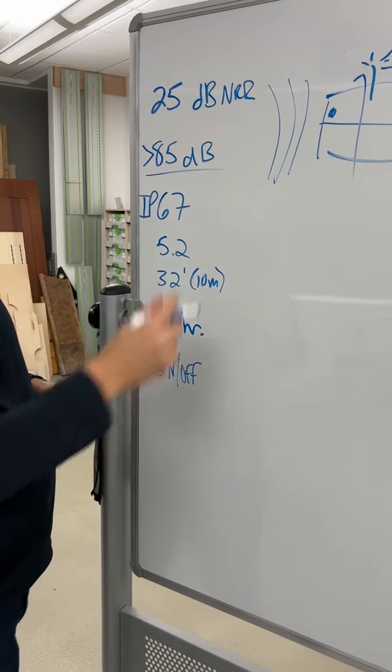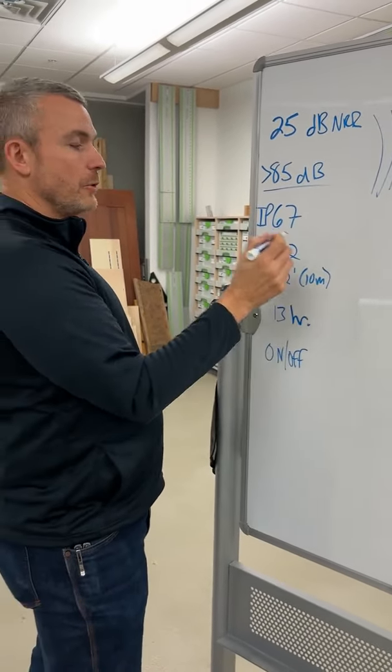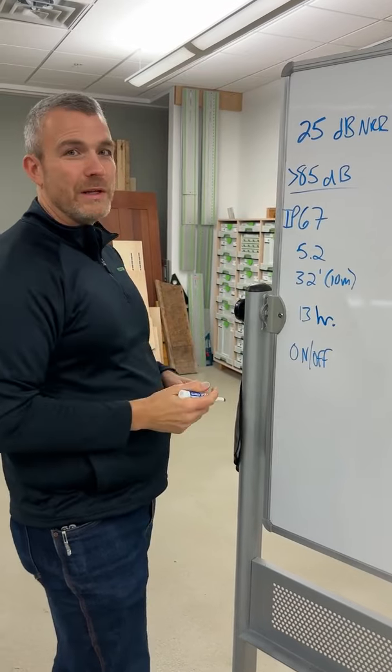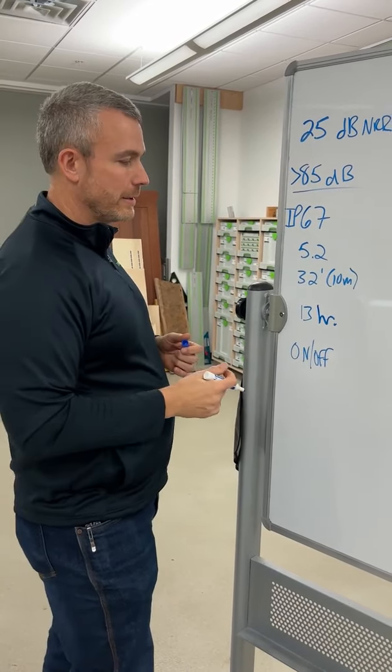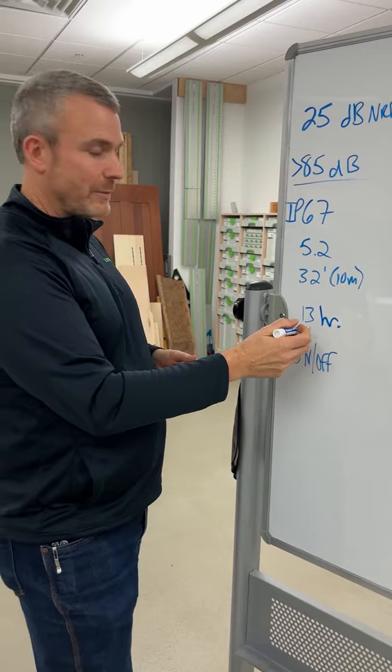You have an IP67 rating for dust and water intrusion. Bluetooth 5.2 gives you 32 feet of range between your streaming device and the earbuds. 13-hour runtime before you put them on the charger.